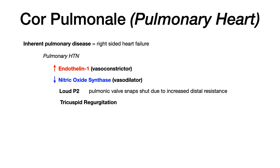You're additionally going to see a loud P2 sound — the P2 sound is the pulmonic valve closing. The reason it is loud in pulmonary hypertension is because there is all of this distal resistance past the pulmonic valve, so instead of closing normally, it snaps shut — it slams shut. There's a lot of distal resistance, so it can't close normally, producing a very accentuated sound. If the P2 is loud, especially with tricuspid regurgitation, think pulmonary hypertension and cor pulmonale.